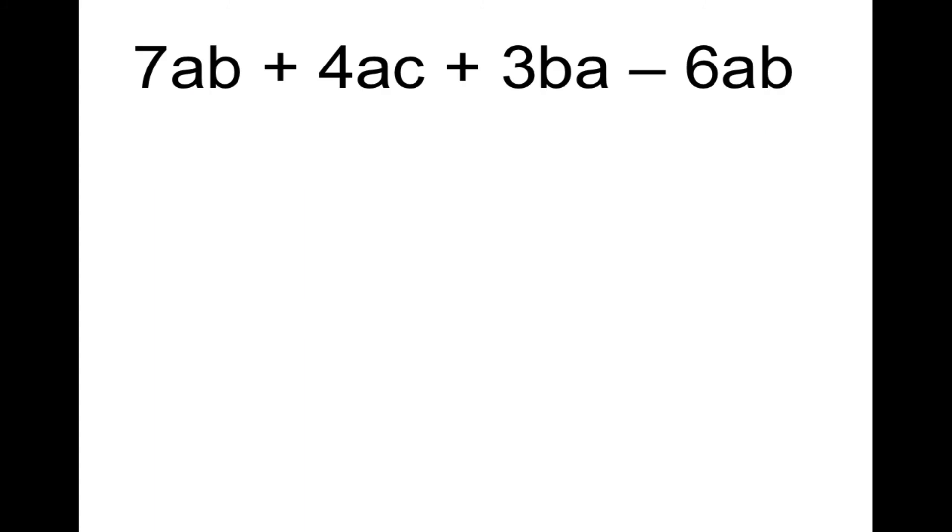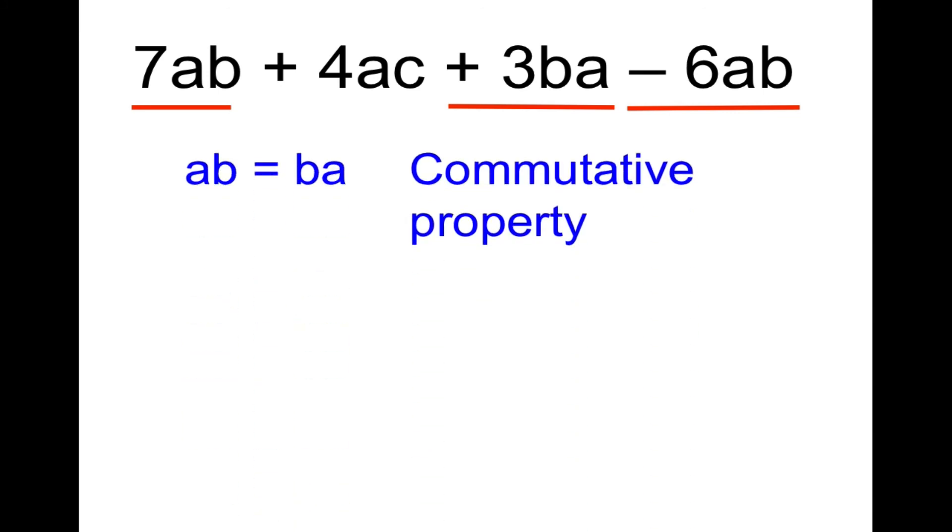We have 7ab plus 4ac plus 3ba minus 6ab. Here's where we need the exact same variables, but what does that mean? I would say that these are all the same because ab equals ba, that's known as the commutative property of multiplication. So we have 7 plus 3 is 10, take away 6 equals 4ab plus 4ac. There's nothing else like the ac, so our answer has two terms.